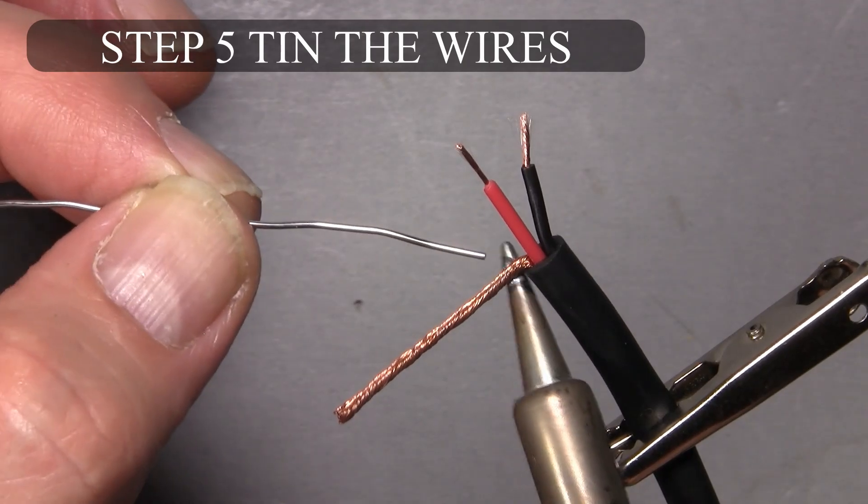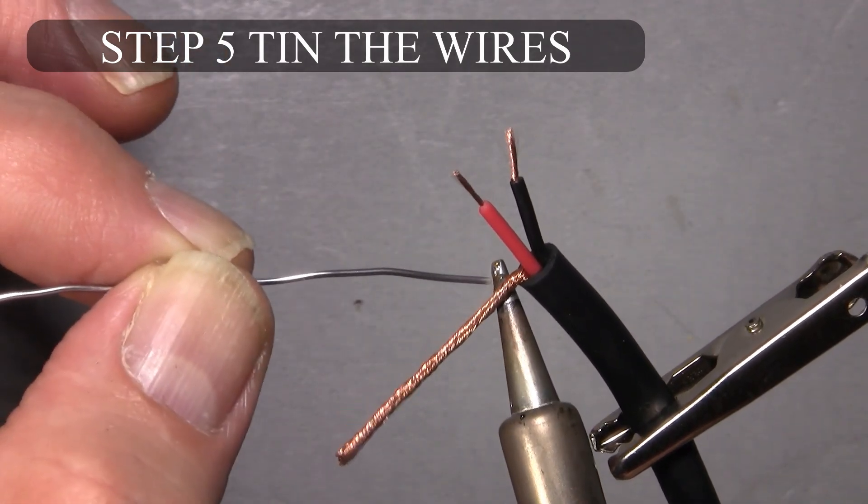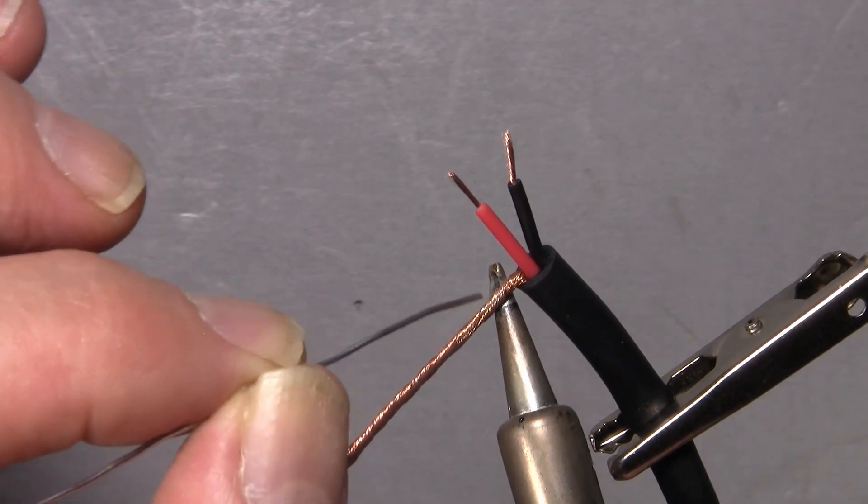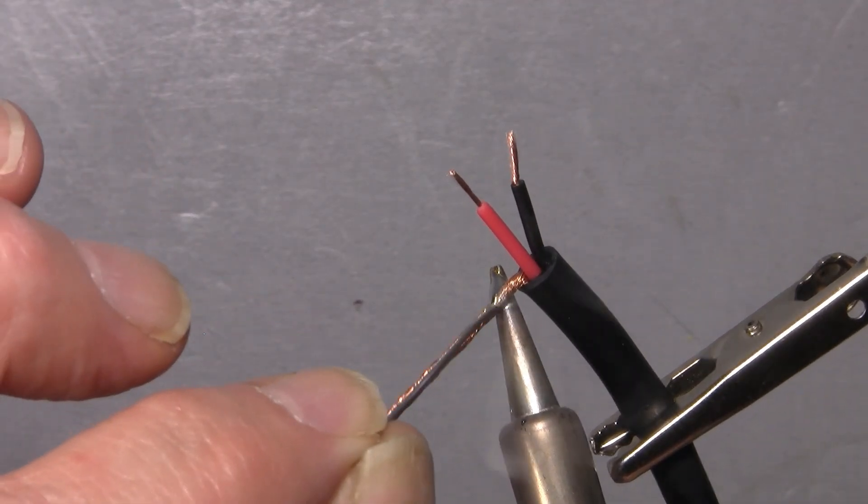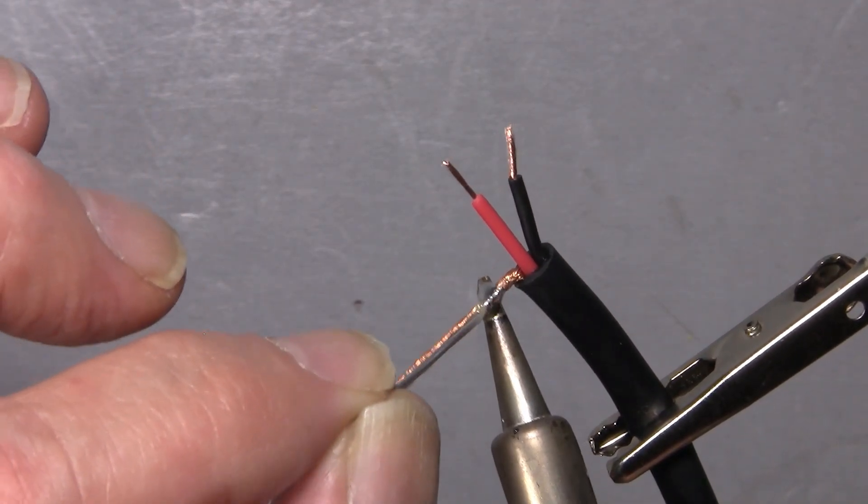Unlike the XLR, when I tin the shield on the TRS, I like to do it close to the jacket. On the XLR, if you remember, I did it on the tip. You'll see why in a second.